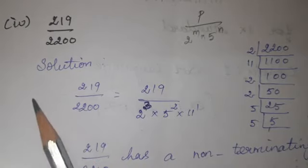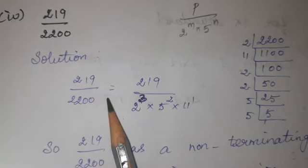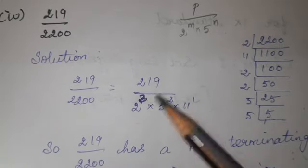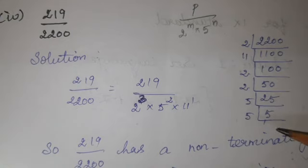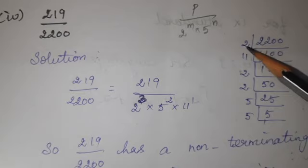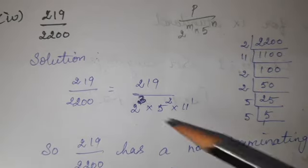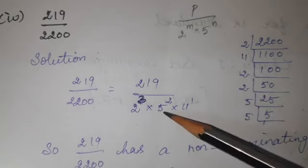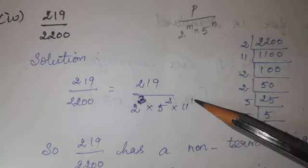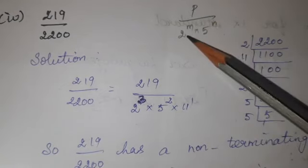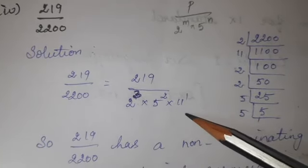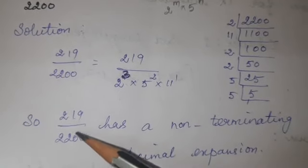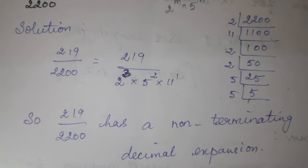4th question: 219 divided by 2200. Factorizing 2200: 2 × 1100, then ÷ 11 = 100, then ÷ 2 = 50, ÷ 2 = 25, ÷ 5 = 5, ÷ 5 = 1. So 2200 = 2 power 3 × 5 power 2 × 11. The format requires only 2 power m × 5 power n, but 11 is extra. Therefore, 219 divided by 2200 has a non-terminating decimal expansion.